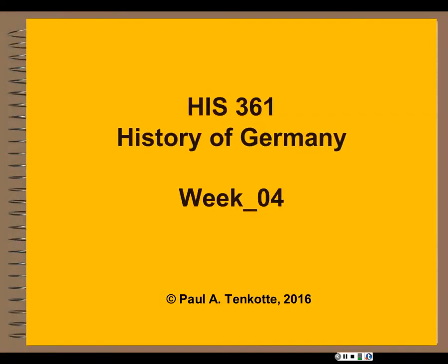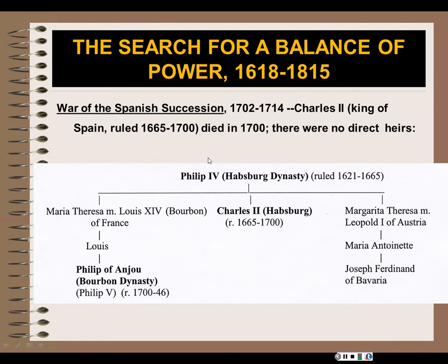Welcome to History 361, the history of Germany. This is week four, and what we want to do in this very short lecture for week four is really describe what was happening in Europe at the time period from about 1618 to roughly about 1815, when Europe was really searching for a balance of power among the different kingdoms and empires. This is very important in order to put things in perspective. Many of you are not history majors, so I'm assuming this lecture will put us all on an even playing field and help you understand what's going on around Germany, Central Europe, Prussia, and Germany as well.